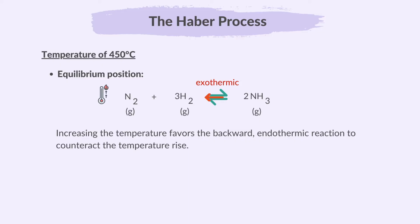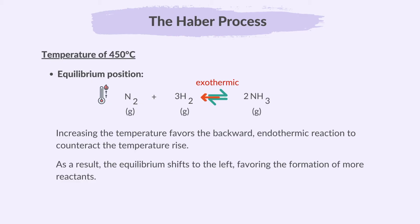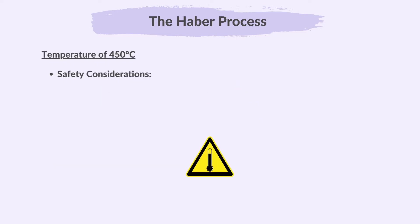The reaction system strives to maintain balance in response to changes. As a result, the equilibrium shifts to the left, favoring the formation of more reactants. However, our goal is to maximize the product yield rather than the reactants, so the temperature can't be too high. The temperature also can't be too low, because reducing the temperature makes the reaction rate slow.